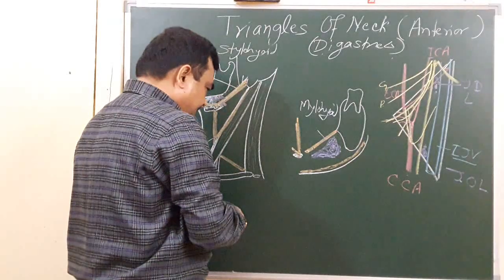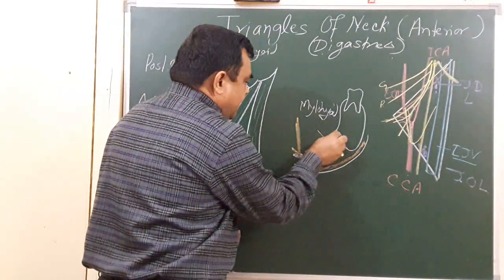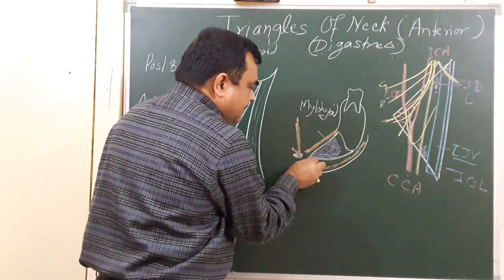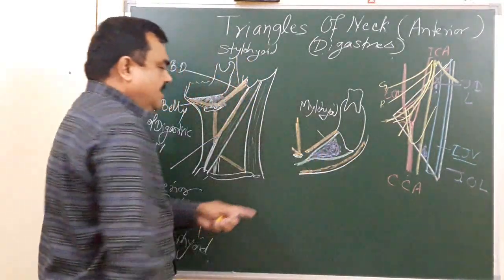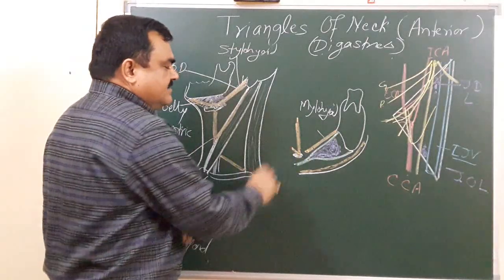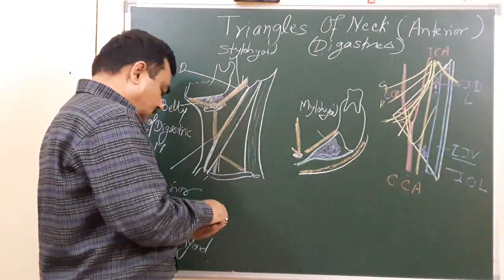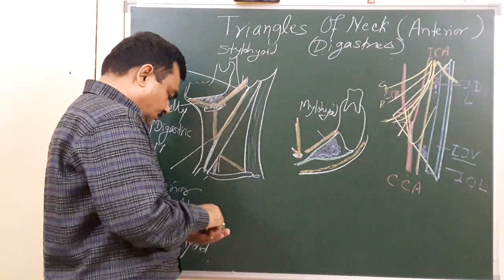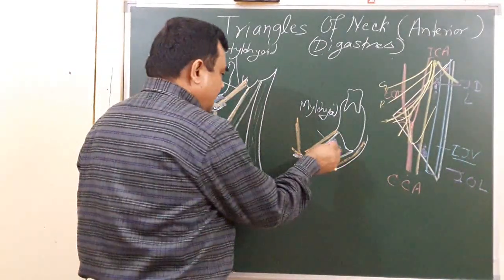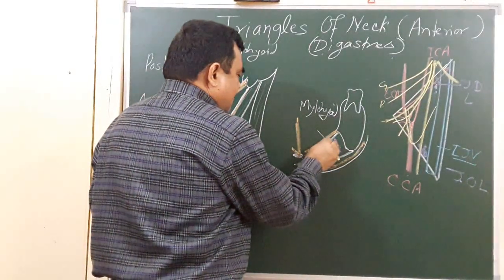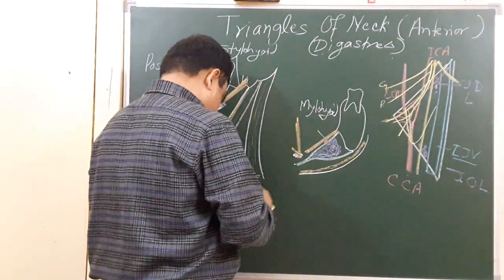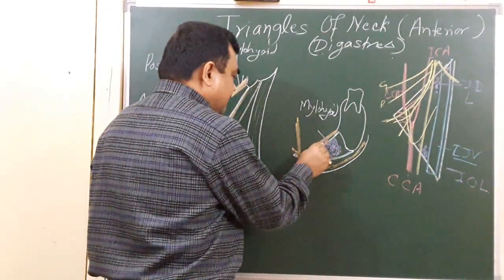The deep fascia splits and encloses this gland — this is the investing layer of the cervical fascia. It encloses the superficial part of the submandibular salivary gland. This is the investing layer of the cervical fascia. Here lies the mylohyoid artery, and this is the nerve to mylohyoid.